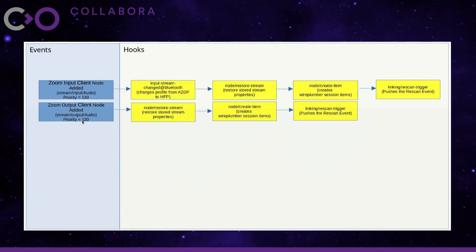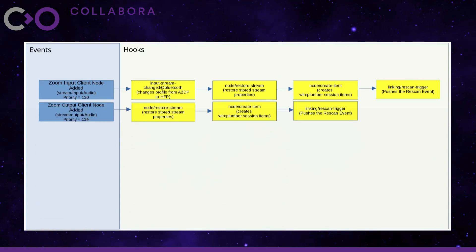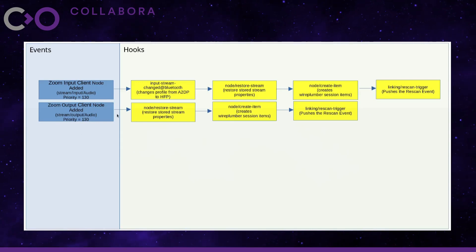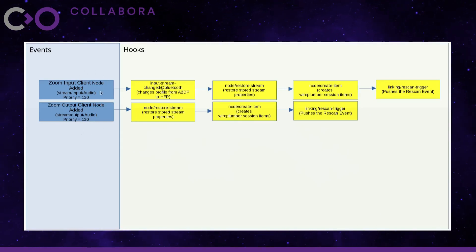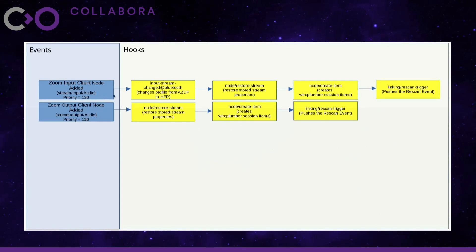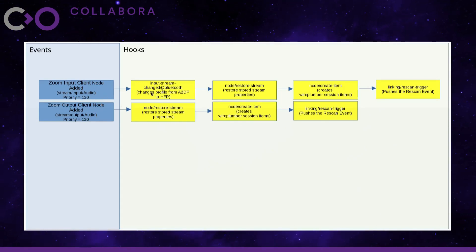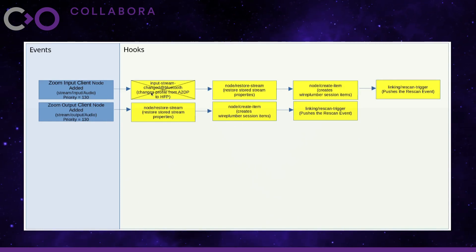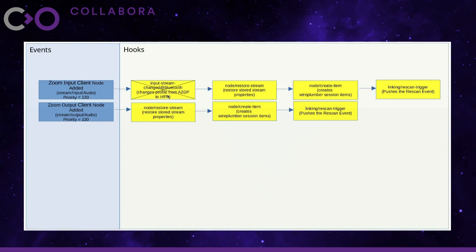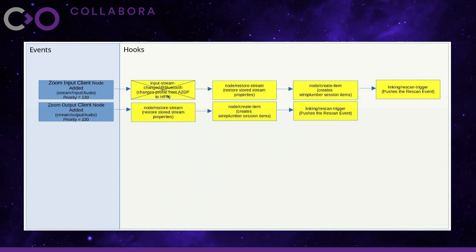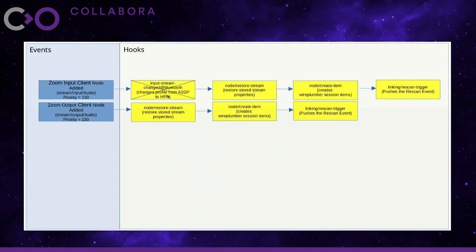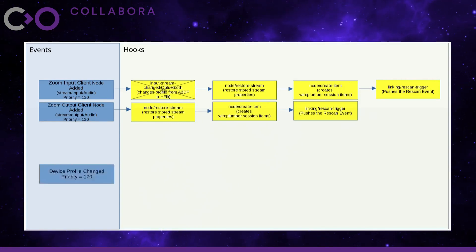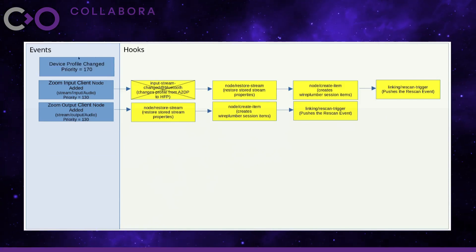Event dispatcher sees there are two events of equal priority, in which case it will prioritize the one which came in first. So it picks the first event and runs the hook of the first priority. This hook is responsible for changing the profile of the Bluetooth device from A2DP to HFP.